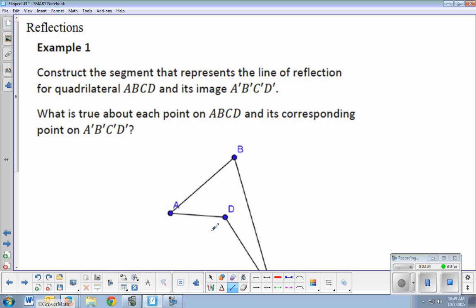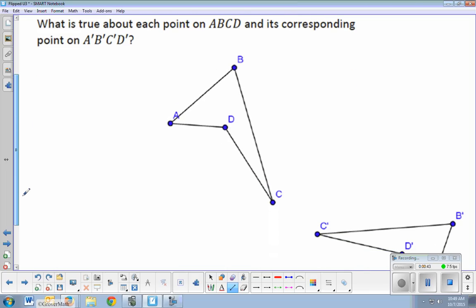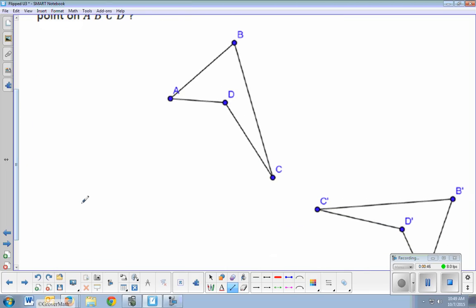So first, how do I find the line of reflection? Construct the segment that represents the line of reflection for this quadrilateral. For finding the point of rotation in the previous video, we did two perpendicular bisectors to see where they cross.